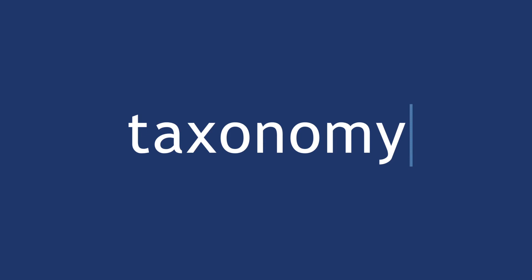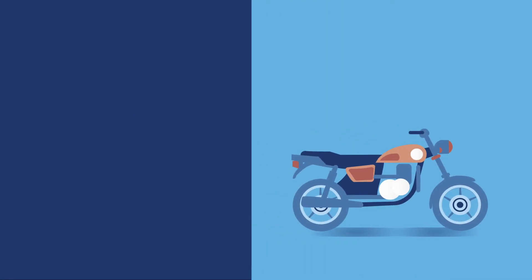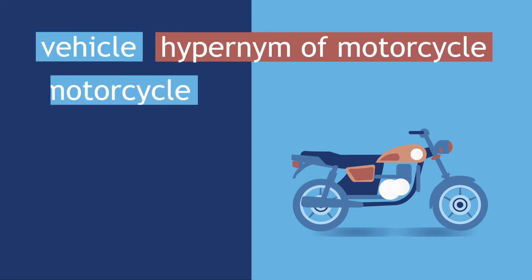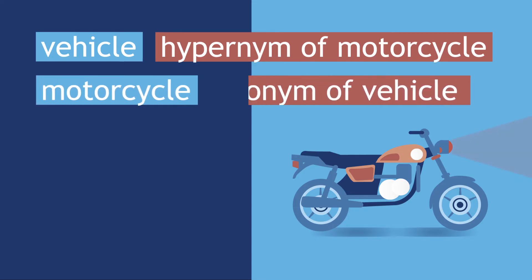A taxonomy usually lacks the definition of a glossary, but the terms are organized by their relationship to one another in the form of a hierarchical tree. Most of the time, this relationship is by hypernymy, also called the is-a relationship. If motorcycle is a vehicle, then vehicle is a hypernym of motorcycle, and motorcycle is a hyponym of vehicle.